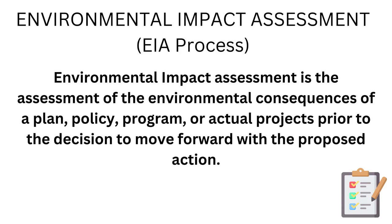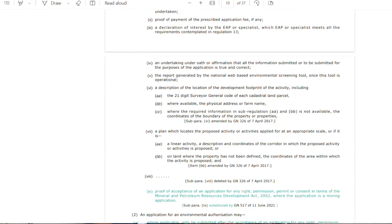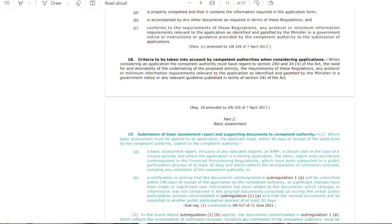Before one applies for an environmental authorization, they have to do what is known as an Environmental Impact Assessment, or EIA, where you assess all the potential impacts of an activity, the extent of those impacts, and possible mitigation and remediation measures. You then submit that assessment with your application, and the decision-maker decides whether the activity can proceed. The type of EIA process required depends on the activity, and NEMA regulations provide a guide to this.